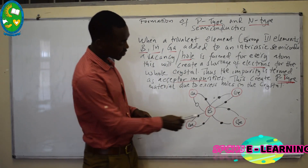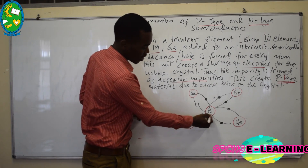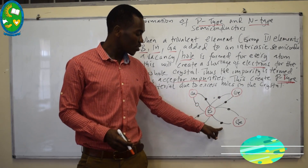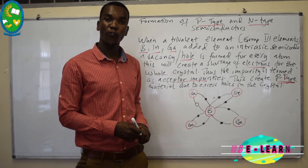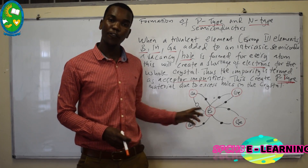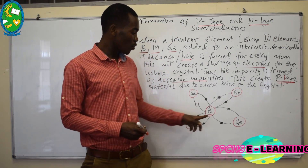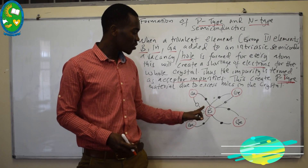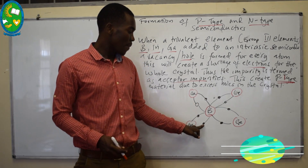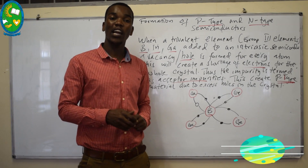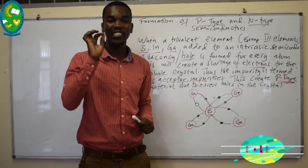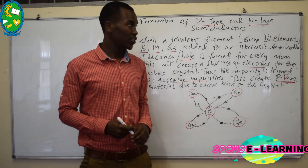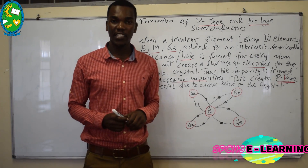Looking at the illustration, boron is the impurity added to a germanium crystal. It shares one electron with each neighboring atom — sharing one, two, and three electrons. But since it has only three electrons, the fourth bond position will become a vacancy space, as it has not been used in bond formation. This is how P-type and N-type materials are formed.